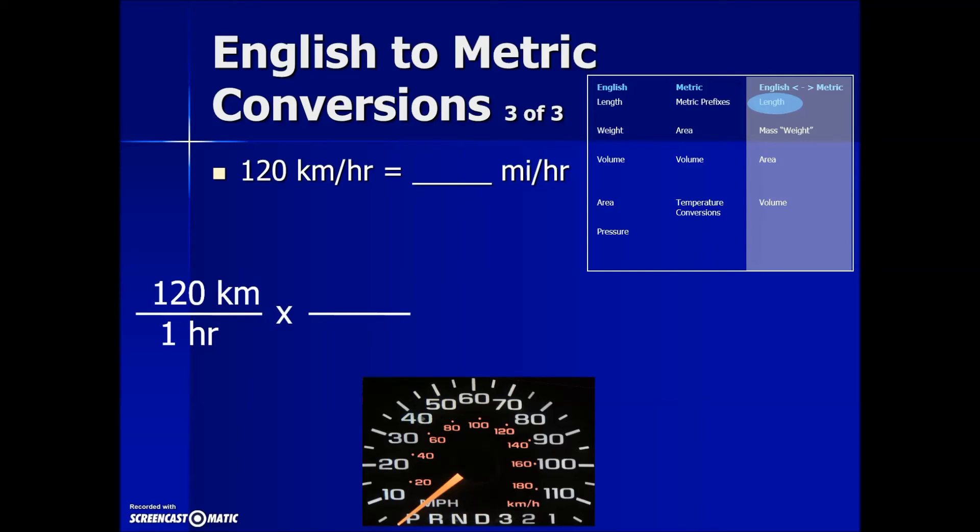We look up that conversion factor fraction. We want to make sure that the kilometer is in the denominator so that it will cancel out our current kilometers. From the table, we find that one mile is equal to 1.61 kilometers. Placing them in the correct order allows us to cancel all kilometers.